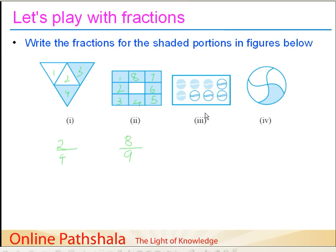In the third example, instead of geometric figures, we have tennis balls. How many tennis balls do we have? We have 8 tennis balls, out of which 4 are shaded. So how do we represent this as a fraction? We have 8 total — 1, 2, 3, 4, 5, 6, 7, and 8 — so 8 becomes our denominator. The numerator is the shaded portion: 1, 2, 3, and 4. So we get 4 as the numerator, and the fraction is 4 by 8.